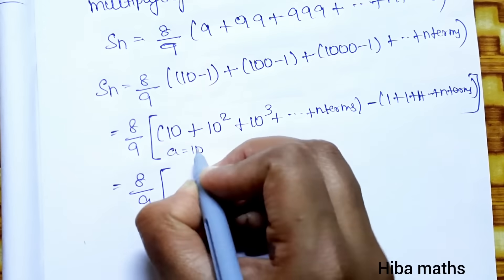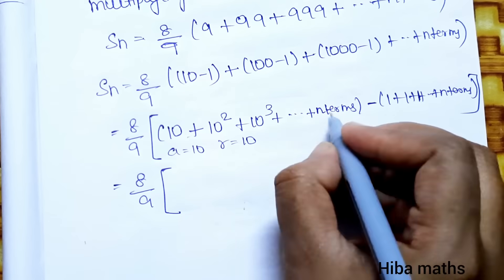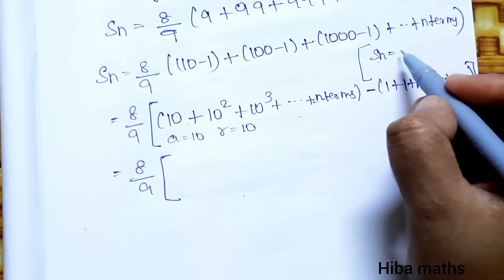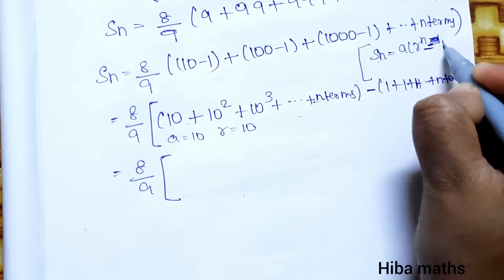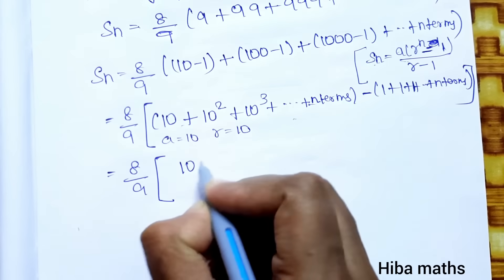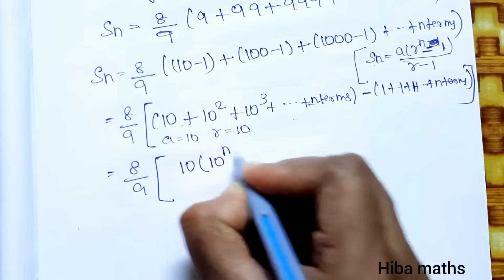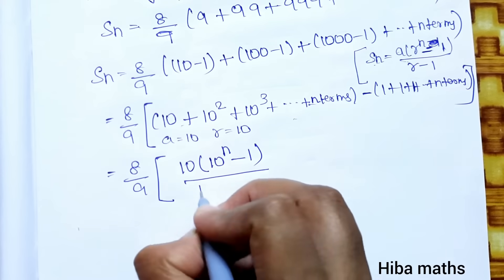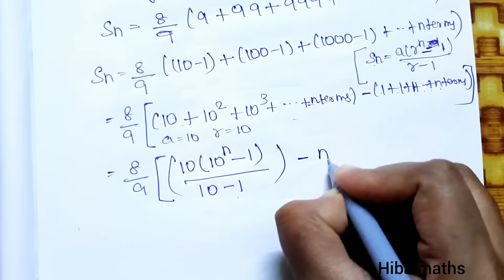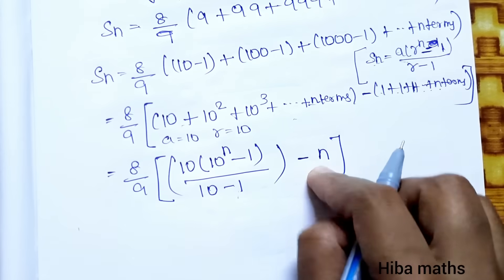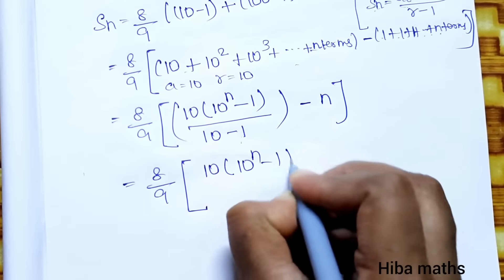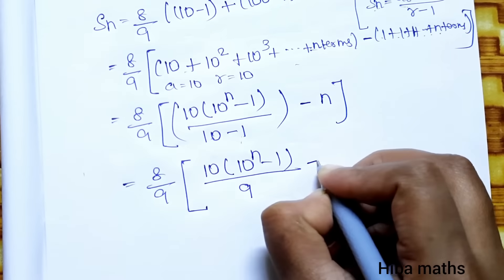The first part is a GP with a = 10, r = 10. Applying the GP formula S(n) = a(rⁿ − 1)/(r − 1), we get 10·(10ⁿ − 1)/(10 − 1) = 10·(10ⁿ − 1)/9. The second part gives n terms of 1, so it equals n. Therefore S(n) = (8/9)·[10·(10ⁿ − 1)/9 − n].